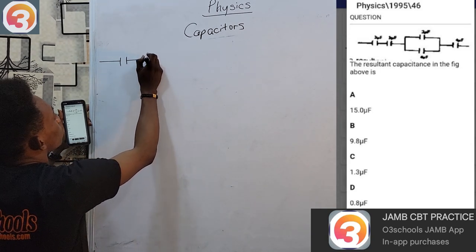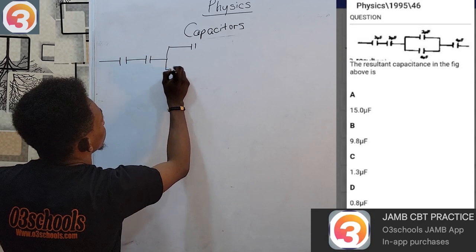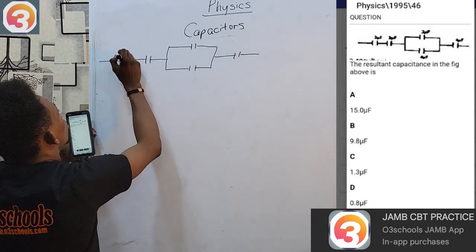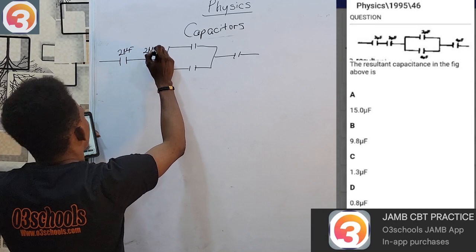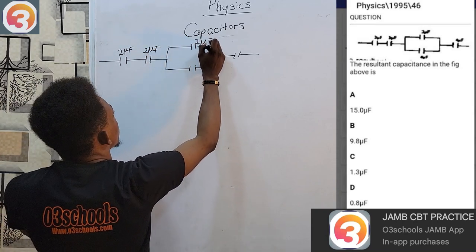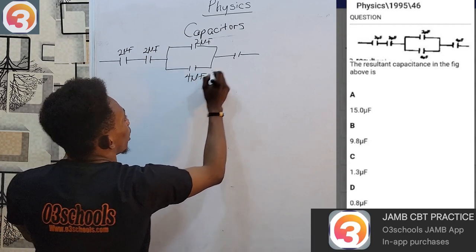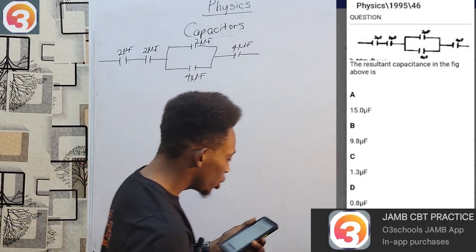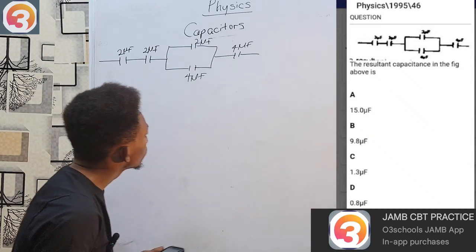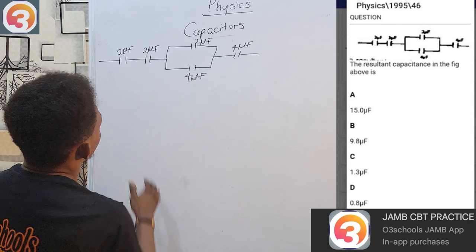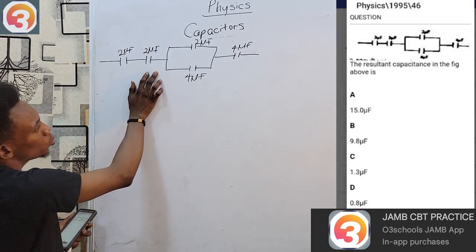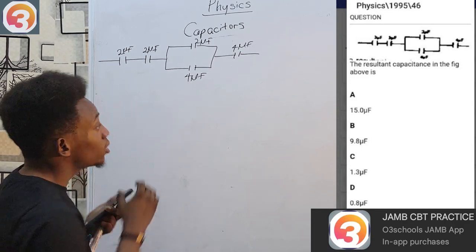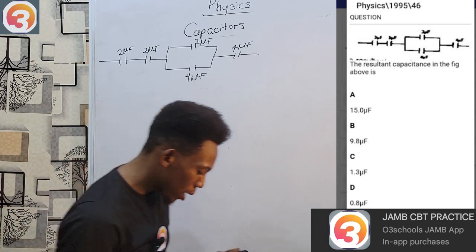Moving on to 1995 question 46: we have a circuit with capacitors — two microfarad, two microfarad, two microfarad at the top, four microfarad, and four microfarad. We are told to find the resultant capacitance. To analyze: two of the capacitors are in series, but one position instead of being a single capacitor is split into two capacitors in parallel with each other.